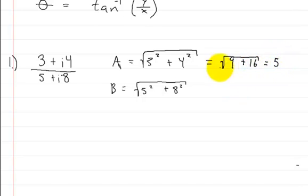So now we have the absolute value A. Now let's finish off B. Here we have 5 squared, which is 25, plus 8 squared, which is 64, all square rooted. You might want to put that into your calculator, but you're going to get about 9.4.